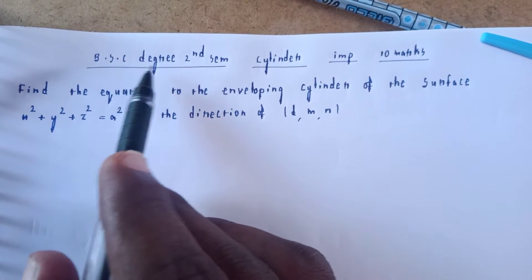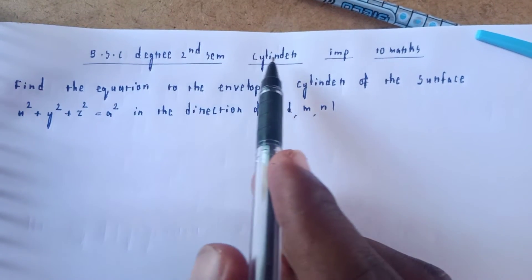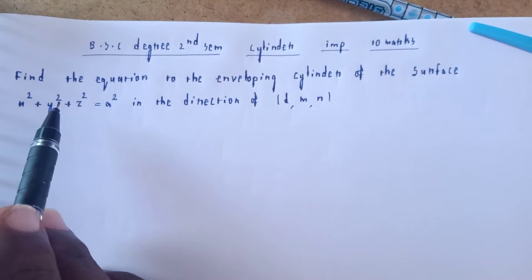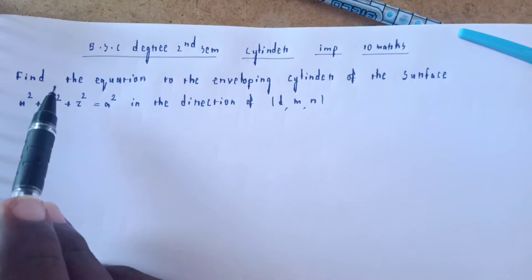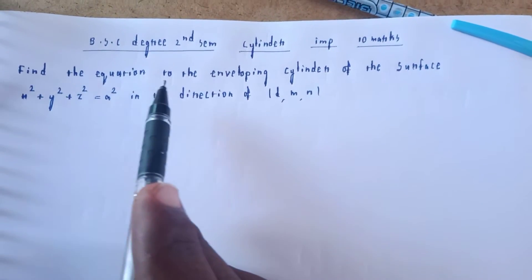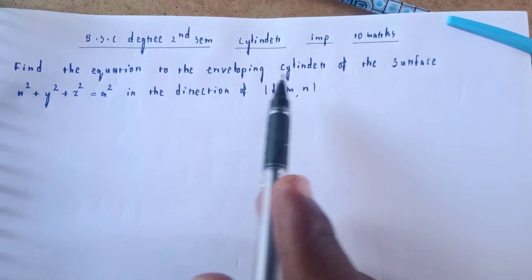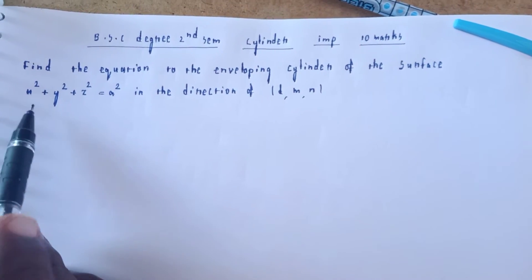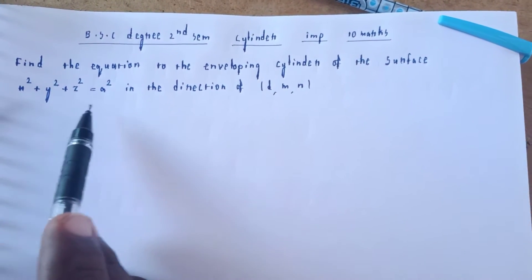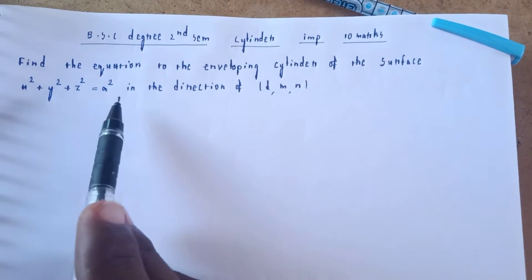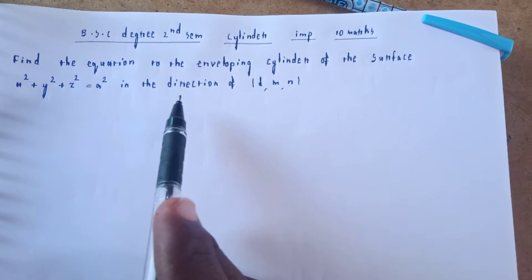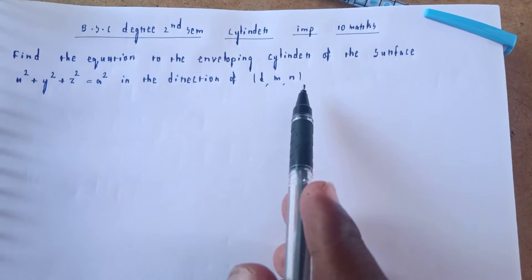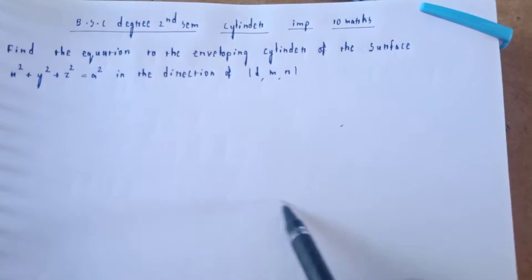Welcome to my channel BSC. Find the equation of the Enveloping Cylinder of the surface x² + y² + z² = a² in the direction of L, M, N.